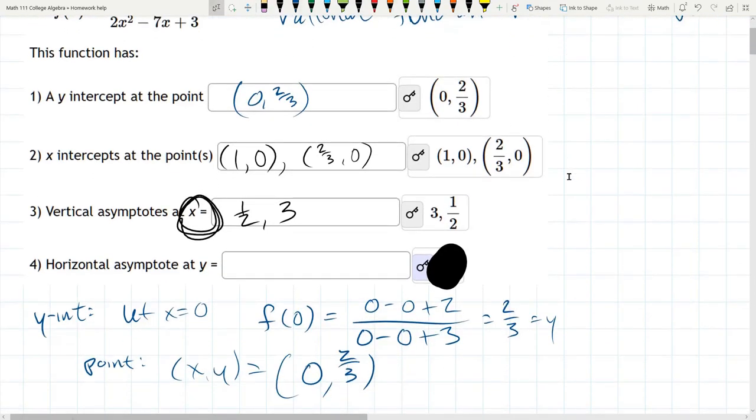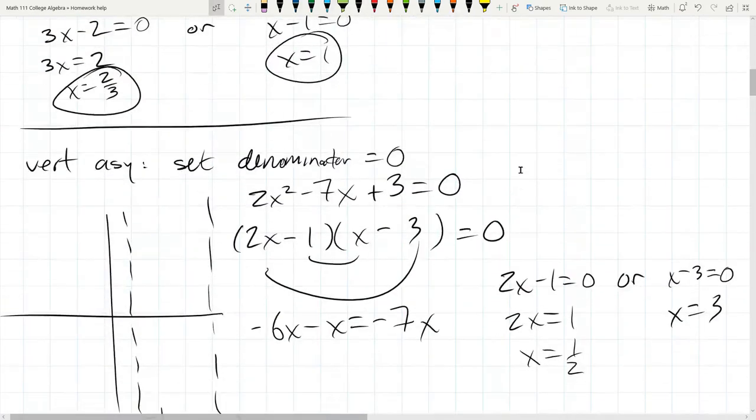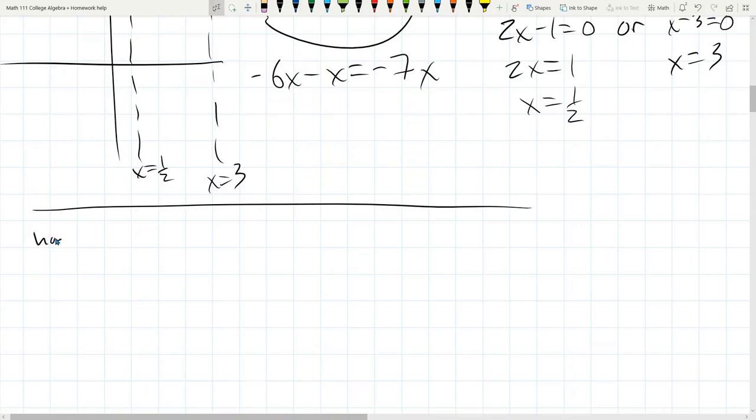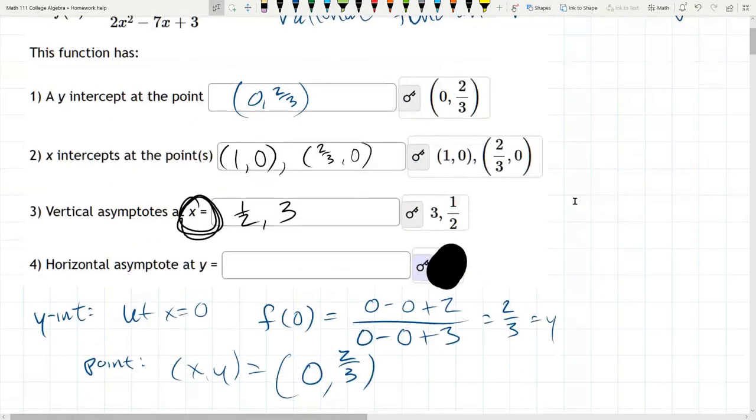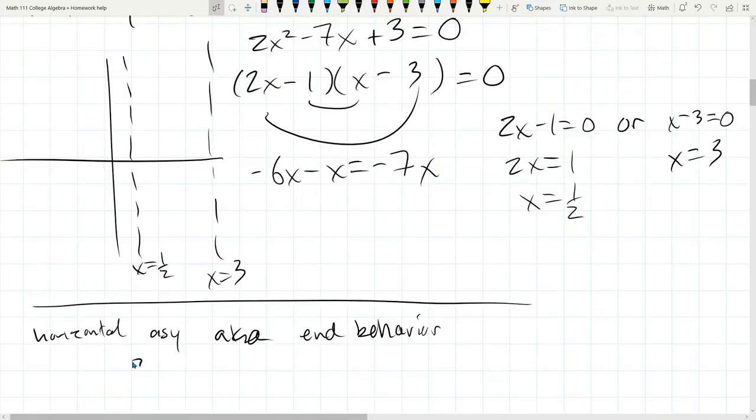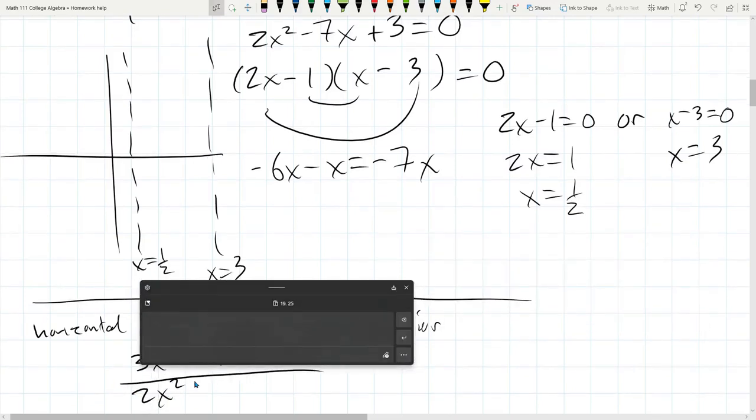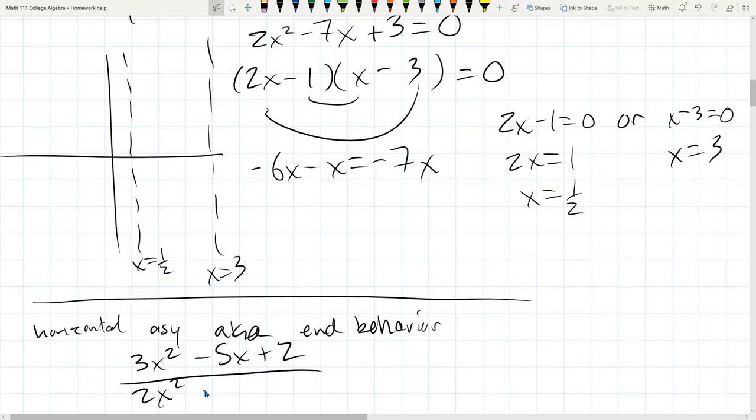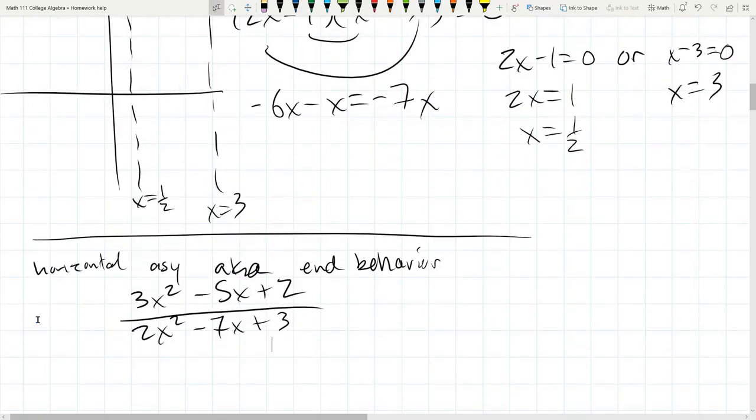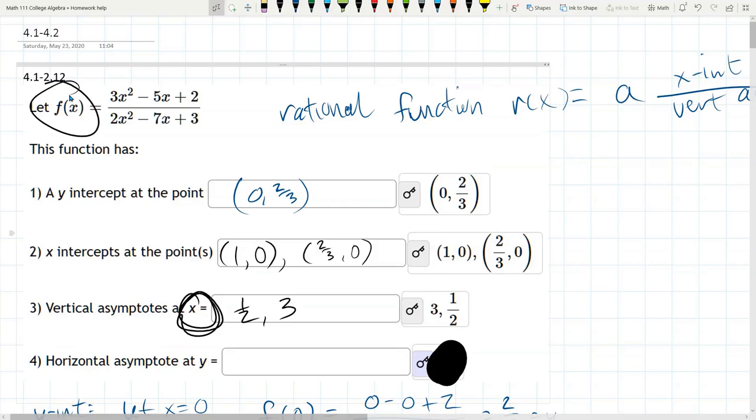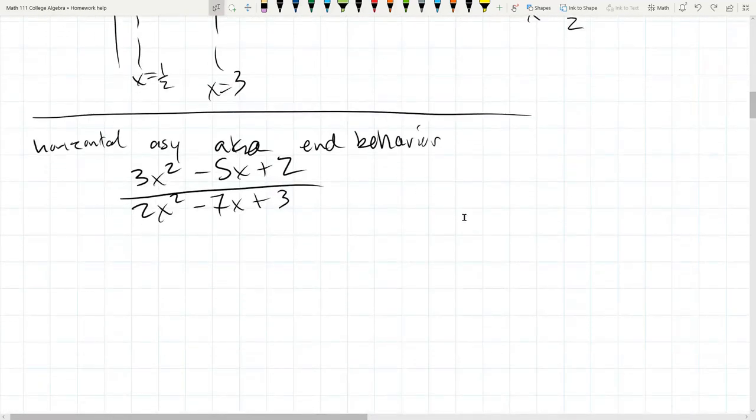We're going to hunt for the horizontal asymptote next. And it's going to be completely different than everything else we've done in this problem so far. So this is also known as end behavior. 3x squared minus 5x plus 2 divided by 2x squared minus 7x plus 3. This is called f of x, I believe. They gave it a name. Yes, they called it f of x. But I'm about to destroy this function. So I don't want to call it the same thing because of what I'm about to do to this thing. So I'm just going to just say y equals.